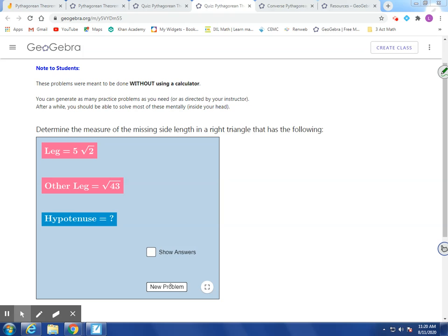So same principle applies. We're going to go with a squared, 5 root 2 squared, plus b squared, which is the square root of 43, square that, is equal to c squared. Now, square root and squaring cancel each other out. So we'll have plus 43 there.